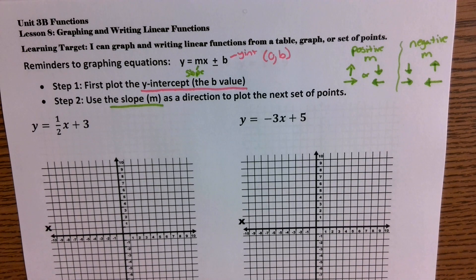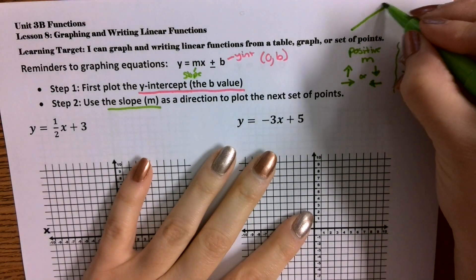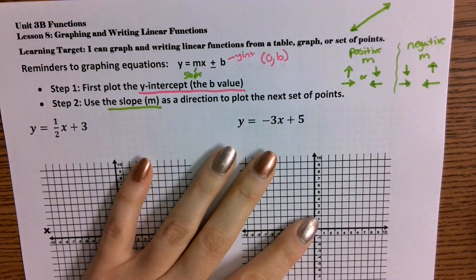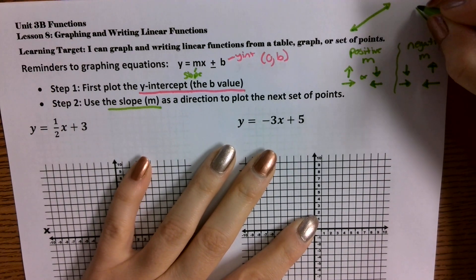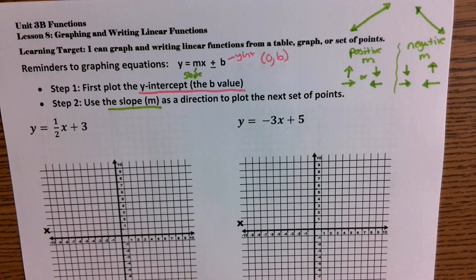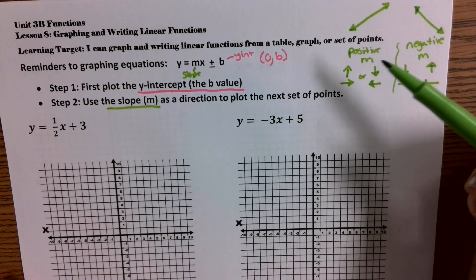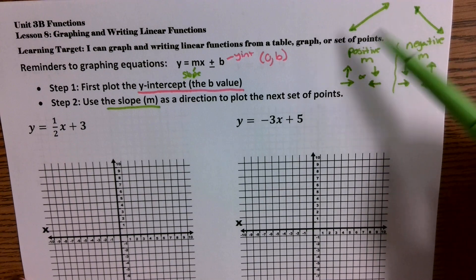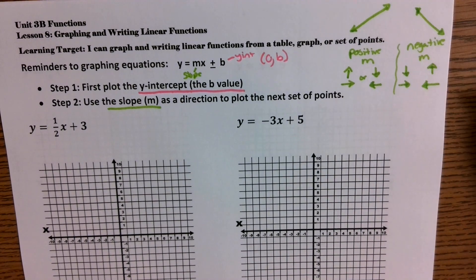When you're looking at a graph, positive slope looks like it's going uphill. Negative slope has a dip going from top left to bottom right — it looks like it's going downhill. Some of you were asking before: how do I know whether the slope is positive or negative? If you're looking at a graph, that's what it would look like.